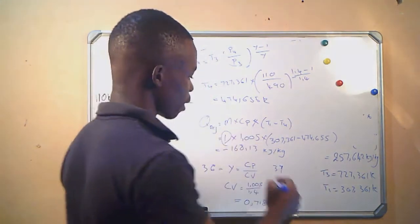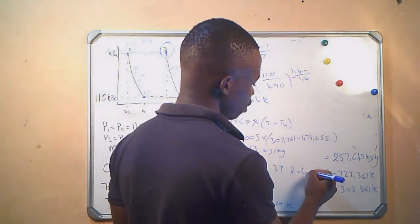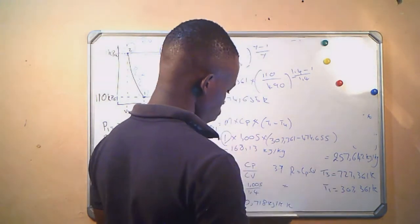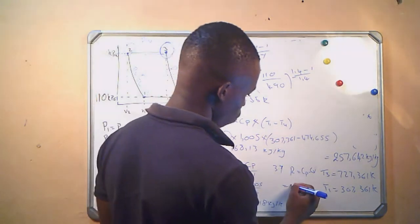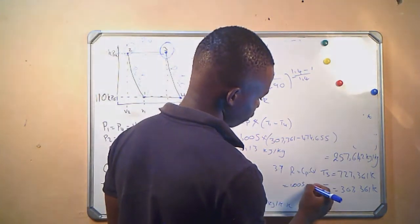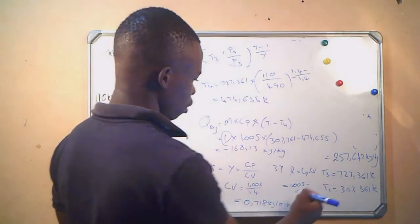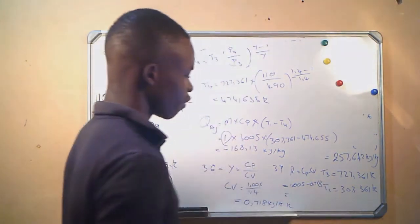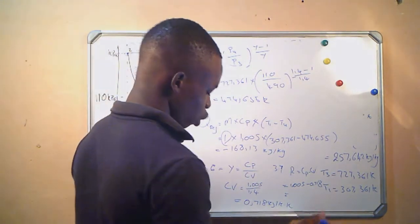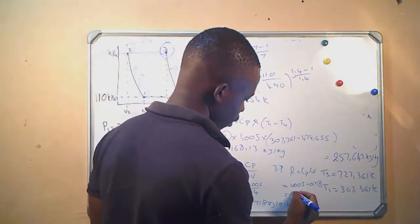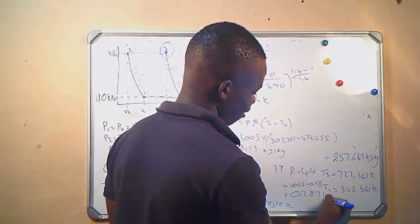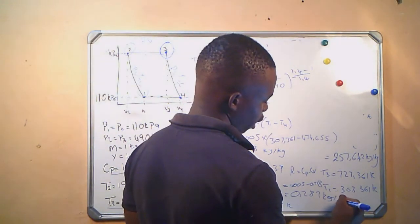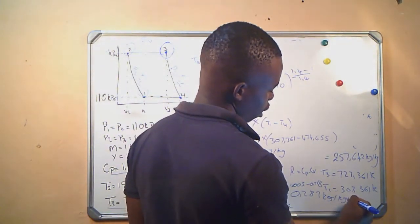Question 7: Calculate the gas constant R. We use R = Cp minus CV = 1.005 minus 0.718, which gives R = 0.287 kJ/kg·K.